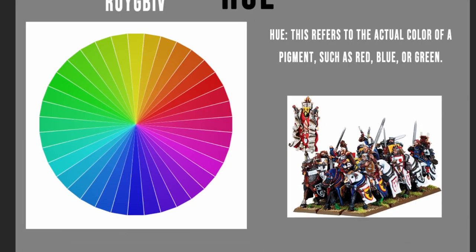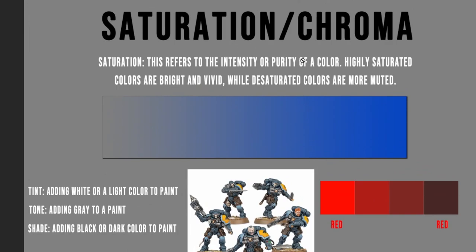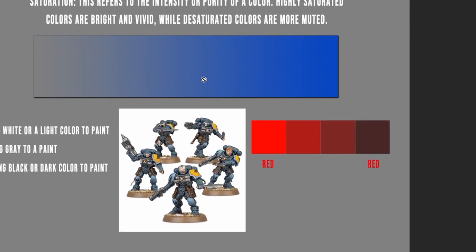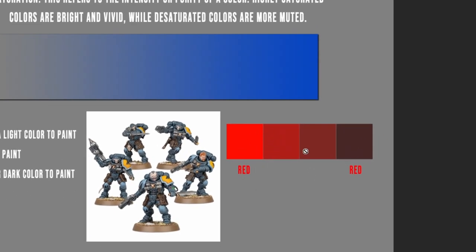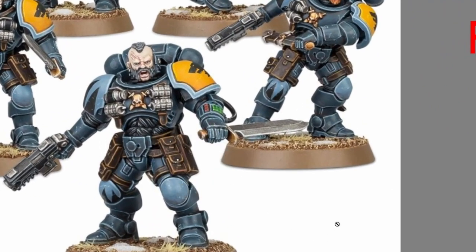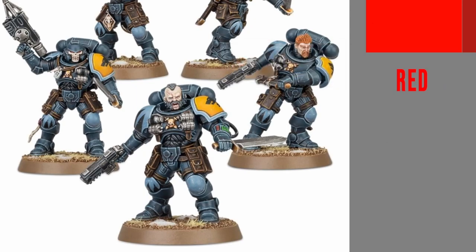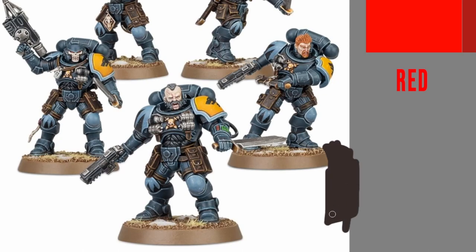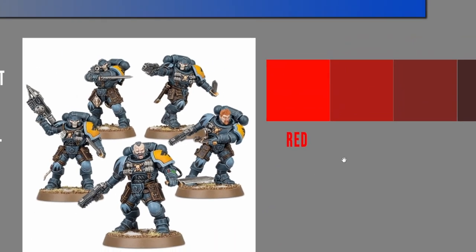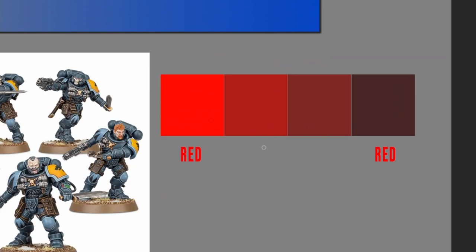The third aspect of color I think is most important is saturation, or chroma. This refers to the intensity or purity of a color. Highly saturated colors are bright and vivid, while desaturated colors are more muted and gray. Most people refer to something like this satchel as brown, but in reality, thinking in terms of pigments, it's technically more of a red — just a very desaturated, low-value red. My art teacher used to say brown was basically a bad word because it's just a tint, tone, or shade of red, orange, or yellow.